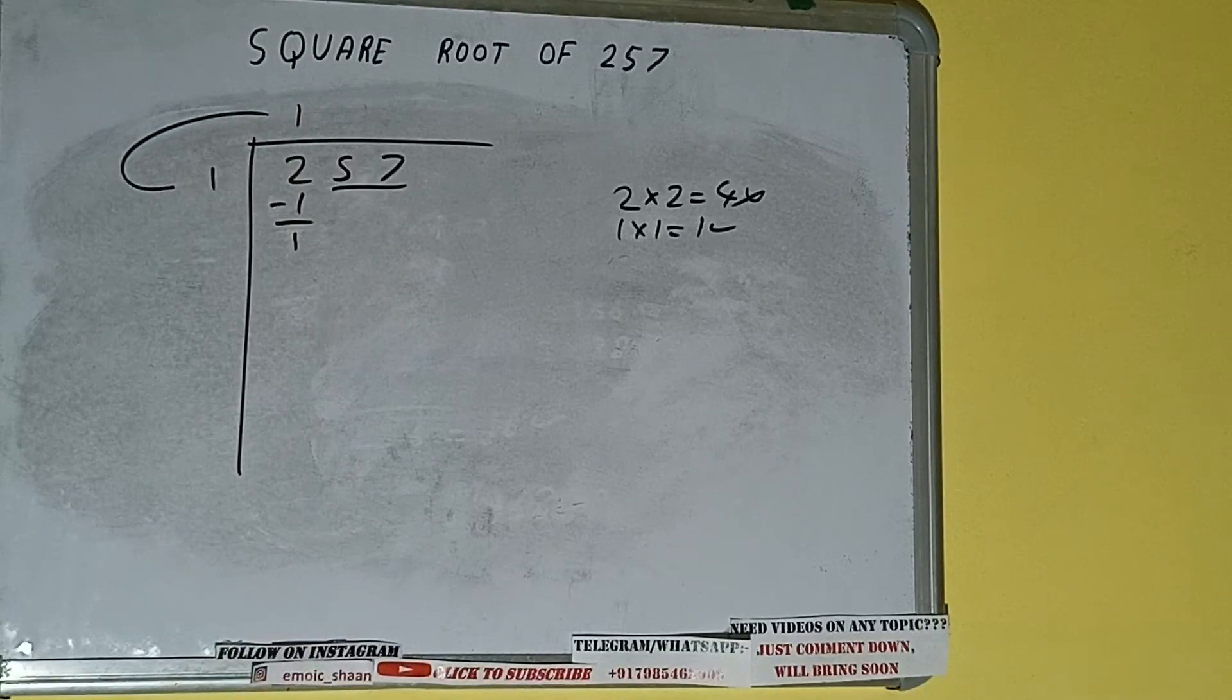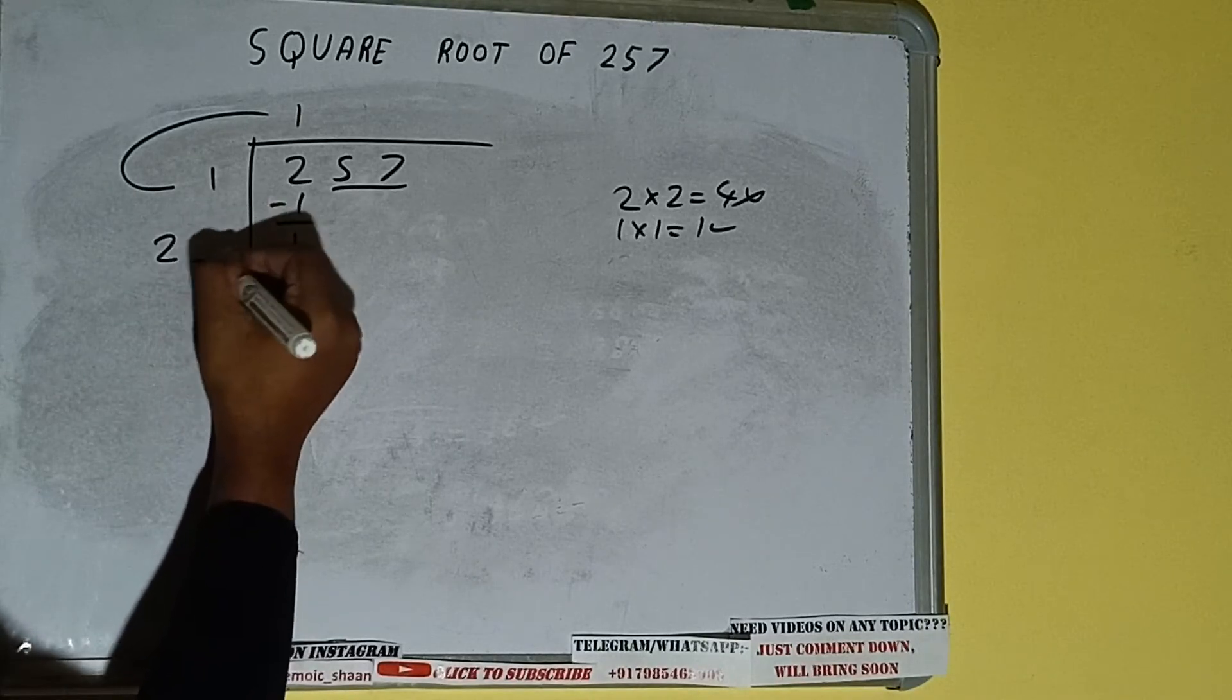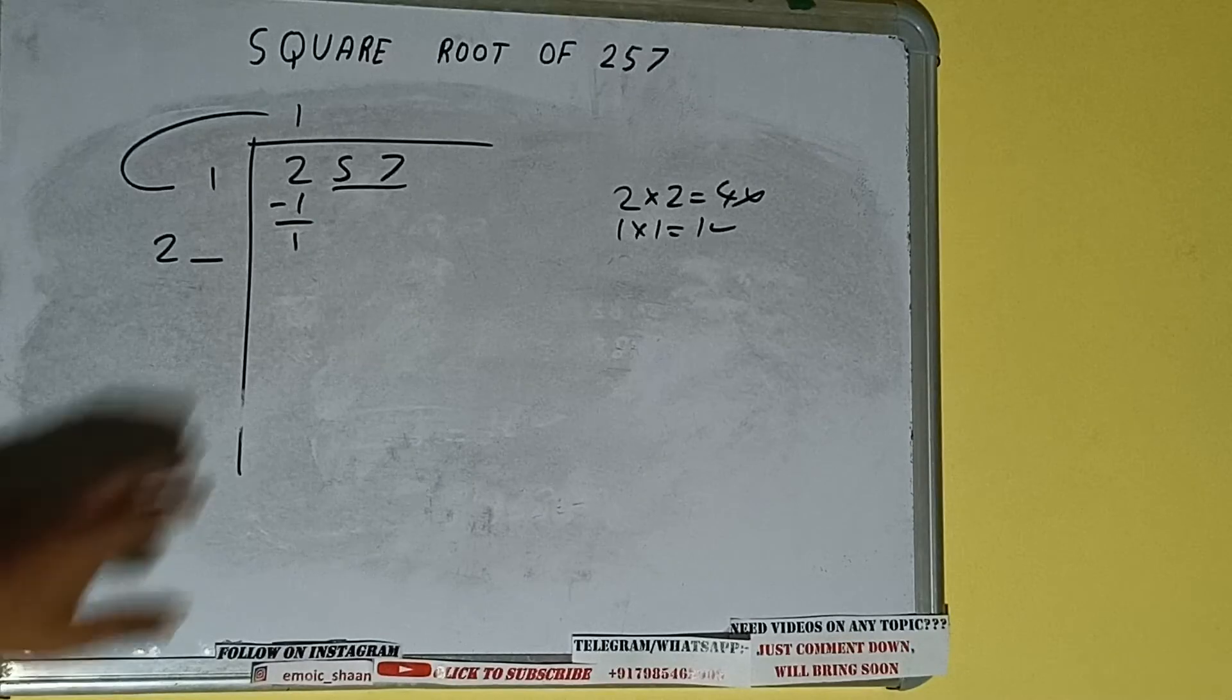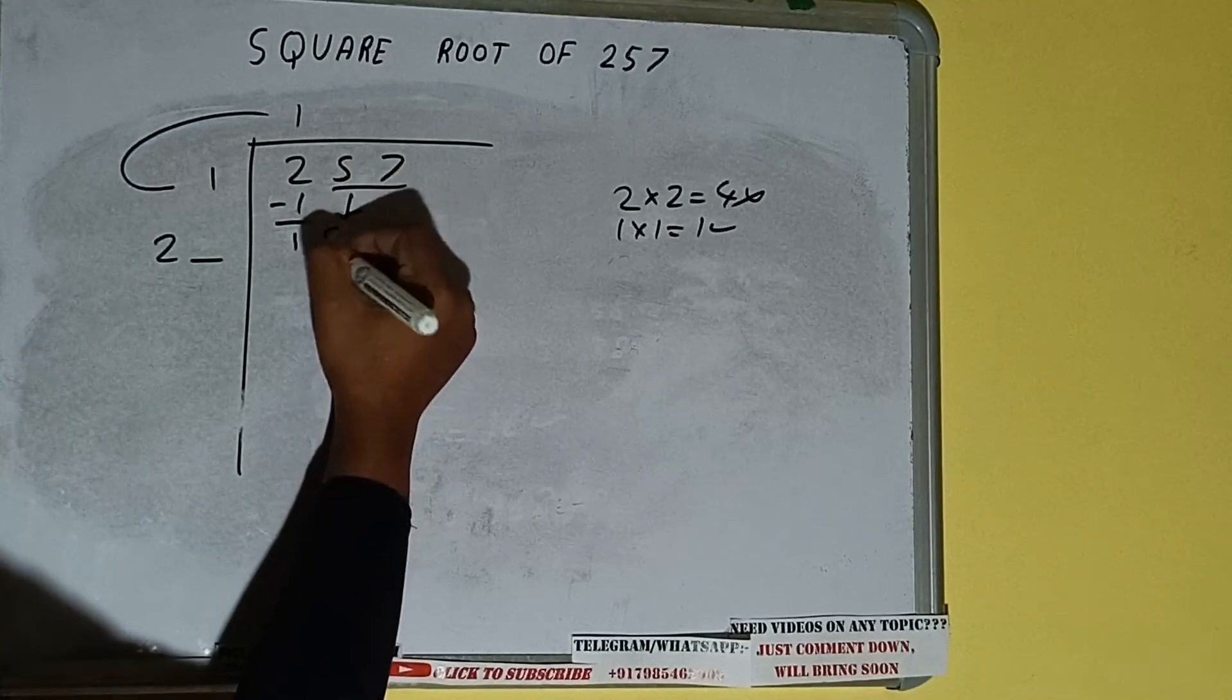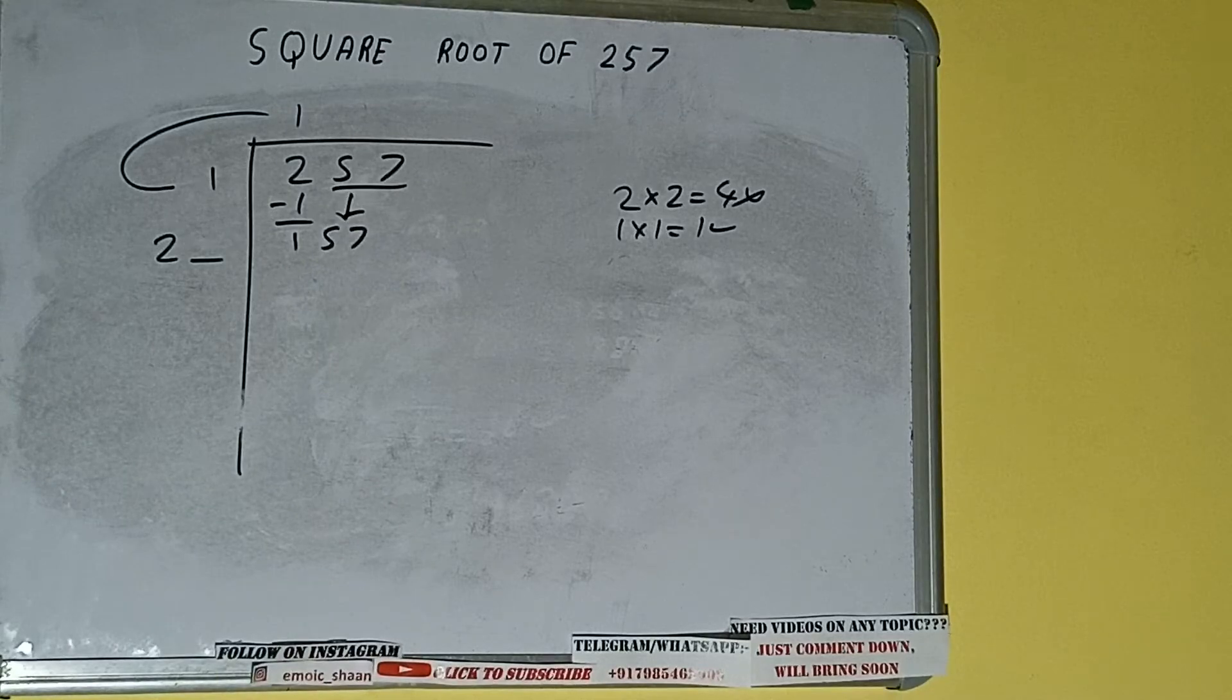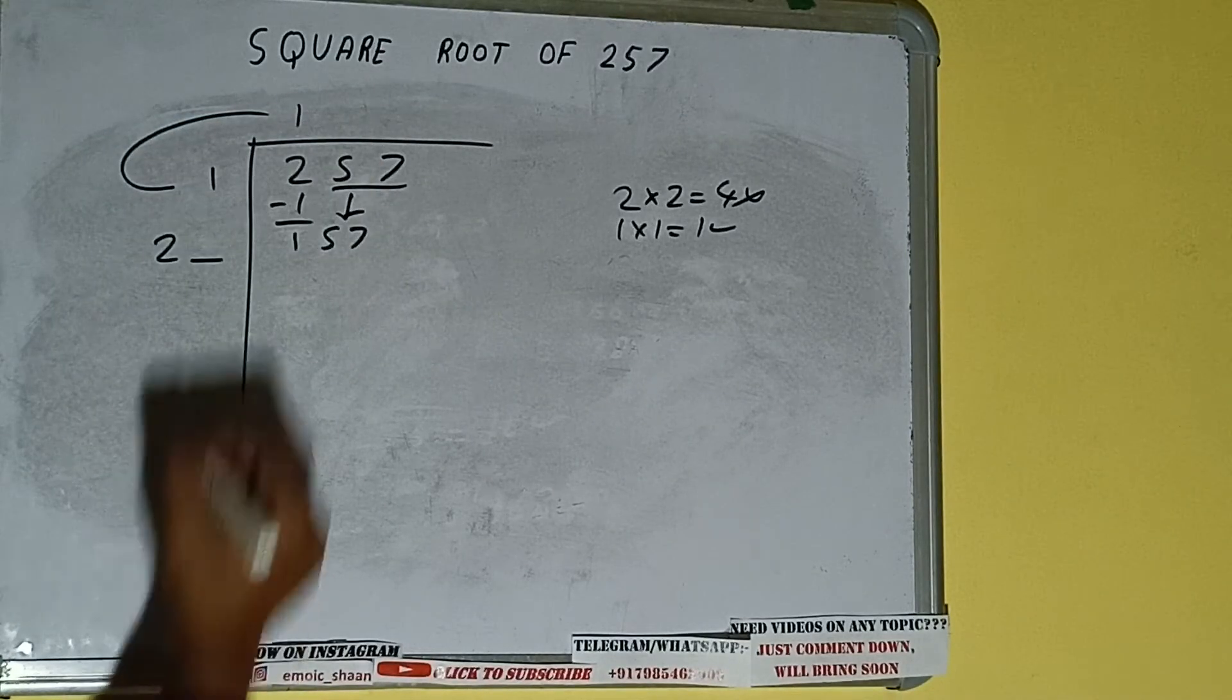We did one into one, so add both. So one plus one will be two, write it here and keep a digit extra. And this number we need to make it big, so bring the next pair down and it will be 157. Now whatever number we write here, we have to write here also. So if we write six here and six here, it will be 156.